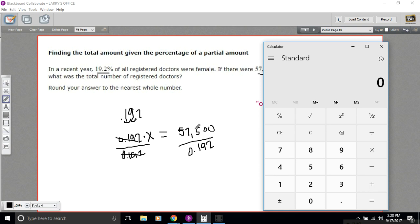Now our answer should be bigger than 57,000 because our total number of doctors is going to be bigger than the number of female doctors. So we'll double check to see that that's the case.